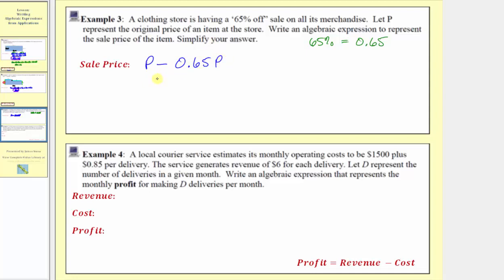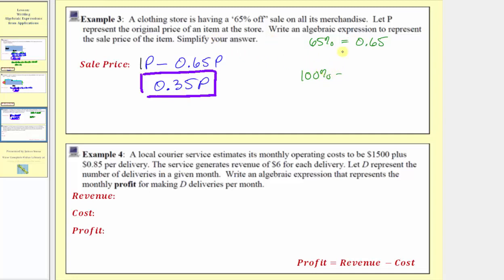So the expression p minus 0.65p will give us the sale price, but these are like terms, so we need to combine them by subtracting. Thinking of p as 1p: 1p minus 0.65p would be 0.35p. This is the simplified expression that gives the sale price. Notice how 0.35 represents the percent of the original price that you're actually paying — if we take 100% of the original price and subtract 65%, that leaves 35% of the price that you must pay, which is why we have 0.35p.